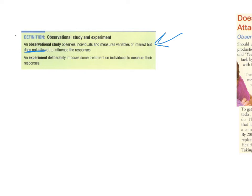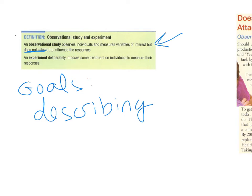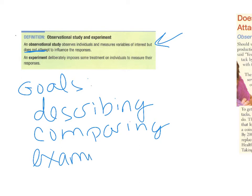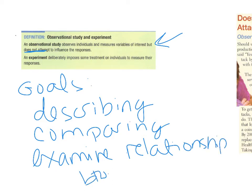The goals of an observational study include describing what's happening, comparing two things by observing and comparing results, and looking for relationships between variables — but not to impose a treatment and not to see if one thing causes another.